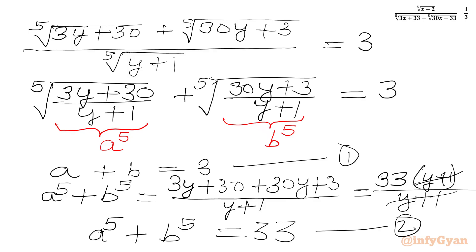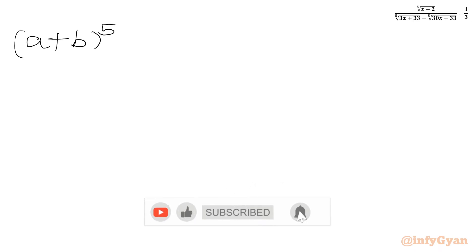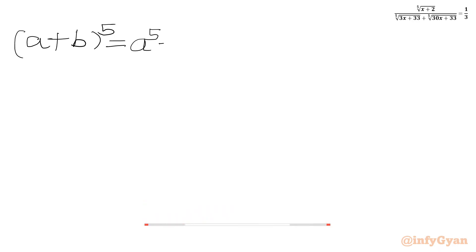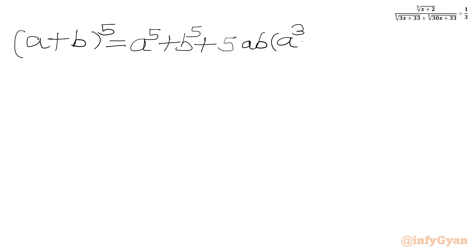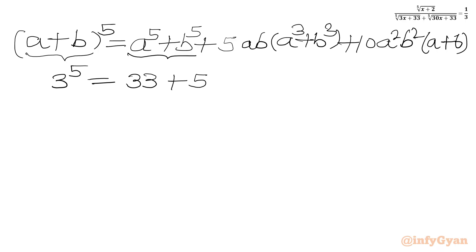Now I will use the binomial expansion for (a+b)^5. This equals a^5 plus b^5 plus 5ab(a^3+b^3) plus 10a²b²(a+b). Plugging in values: (a+b)^5 is 3^5, and a^5+b^5 is 33, so we write 3^5 equal to 33 plus 5ab(a^3+b^3) plus 10a²b² times 3.